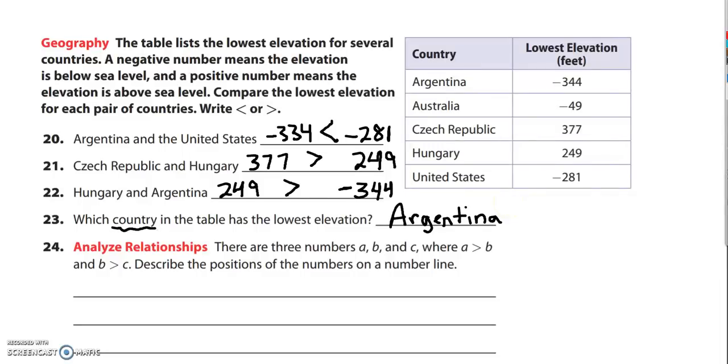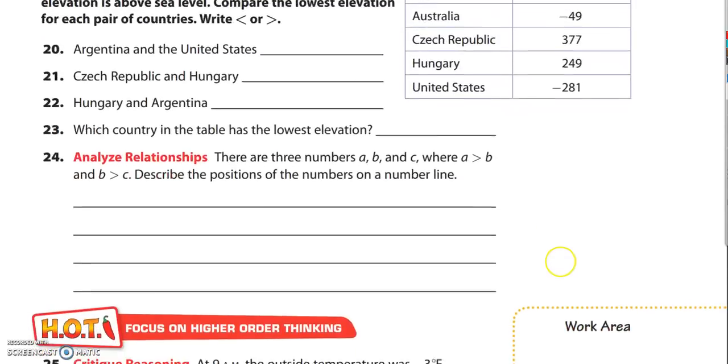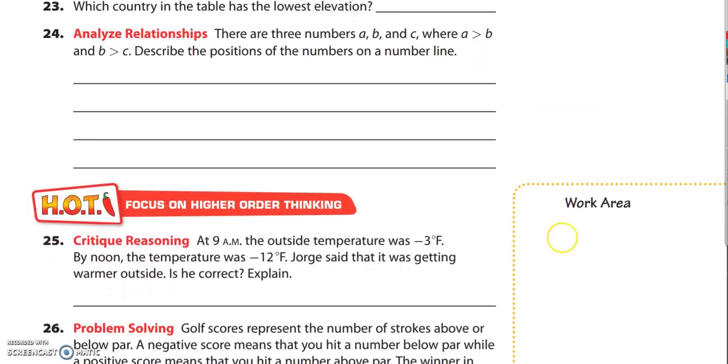Let's check out number 24 now. Number 24 looks kind of confusing because we're using variables here. Question 24 reads there are three numbers a, b, and c, and then it gives you some clues about what a and b are. a is greater than b, b is greater than c.